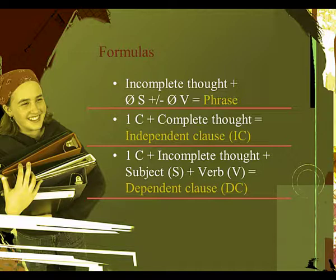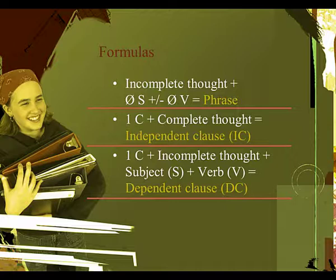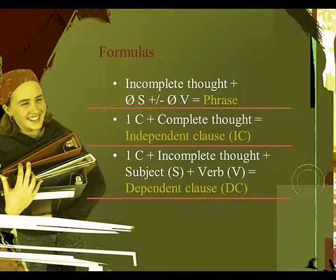Next formula: if there is just one clause which is not a complete thought but does have a subject and verb — because it is a clause — then it equals a dependent clause — DC. The next two videos in this series will look at the four sentence structures.